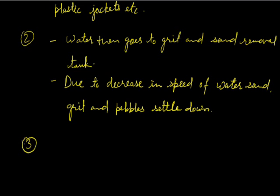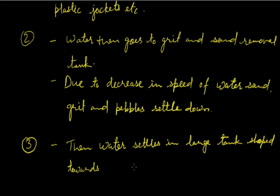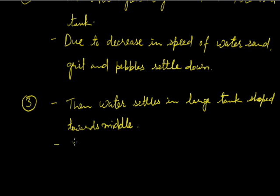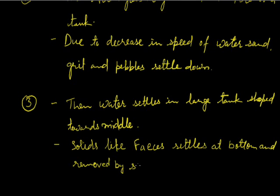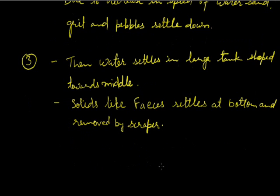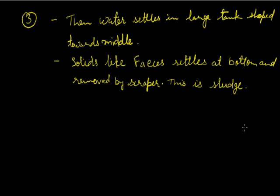Then this water is allowed to settle in large tank which is sloped towards the bottom. So solid impurities like feces settle at the bottom and are removed with the help of a scraper. Still some impurities like oil and grease are floating on the surface of water. These are removed with the help of a skimmer.